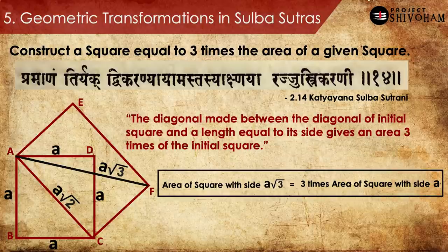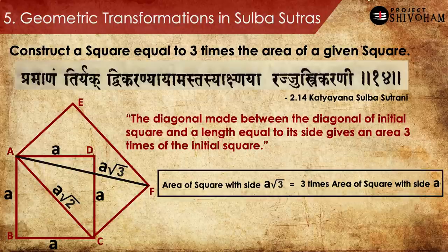This is how you can triple the area of a square using Buja Koti Karani Nyayam. But why are these transformations needed? They are needed to cut bricks proportionally to construct the Yajna Vedis or fire altars. If you need a brick of area X and then another brick three times that area, these principles help you calculate by doing geometric transformations. This is the reason Buja Koti Karani Nyayam was constituted as part of Yajurvedam.